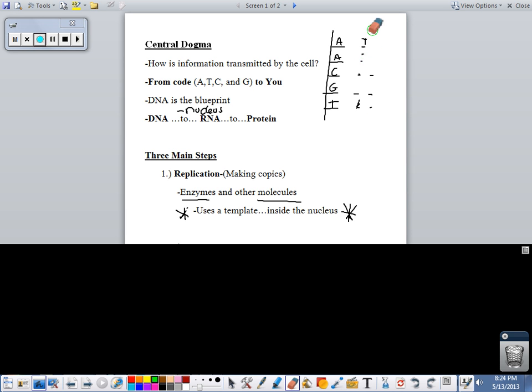It comes in and builds a new molecule like this. And the original is part of the new one. So every time you make a new DNA molecule, half a molecule is the original, which is really cool. Because the chance of making a mistake is minimized greatly if you have half of the original molecule.